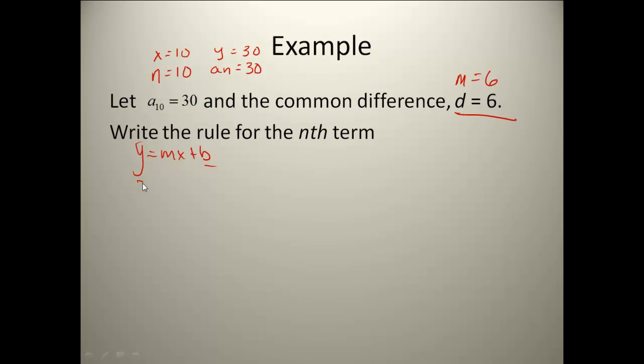I'm going to plug in my 30, plug in my 6, plug in my 10, solve this out, and I get b equals negative 30. So my rule for the nth term, if I come back to my slope intercept form, I would have a sub n equals 6 times n minus 30.